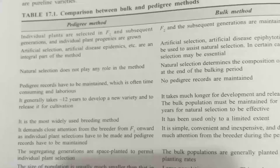In the pedigree method, we start selection at the individual plant progeny level. But in the bulk method, we maintain the population as a bulk.